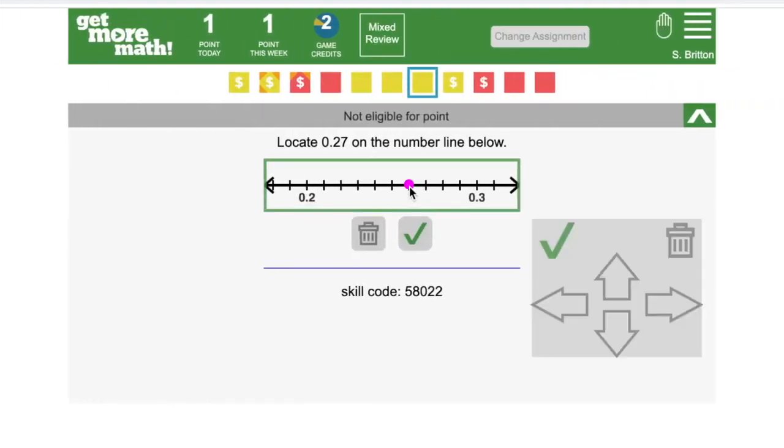If you realize that your point is in the wrong place after you click on the green check, you can click on the trash can below the number line to delete it, or you can click on the point again. It'll turn pink, and you can keep adjusting it.